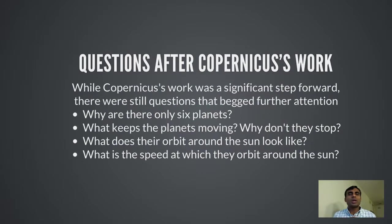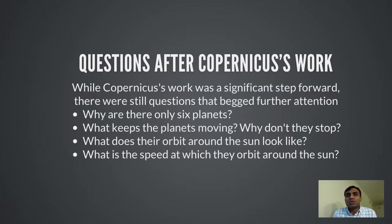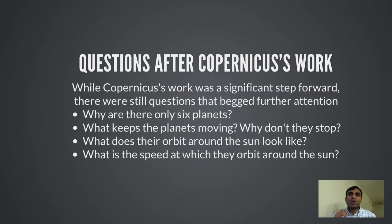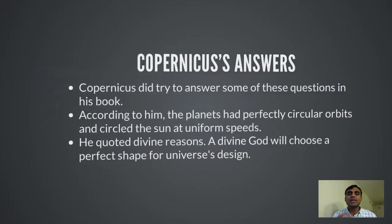While Copernicus's work took us a great deal forward, there were still many unanswered questions — such as why are there only six planets and not two or a hundred? What keeps the planets moving? Why don't they stop? What does the orbit of these planets around the sun look like? And what about the speed at which they orbit the sun — is it always constant?